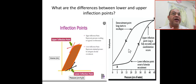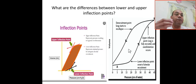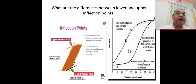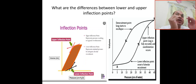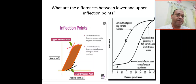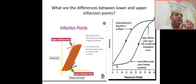What are inflection points? Inflection points represent a sudden change in alveolar opening and closing. The lower inflection point represents the opening pressure — if you give a minimal amount of pressure, it will give you a huge volume.